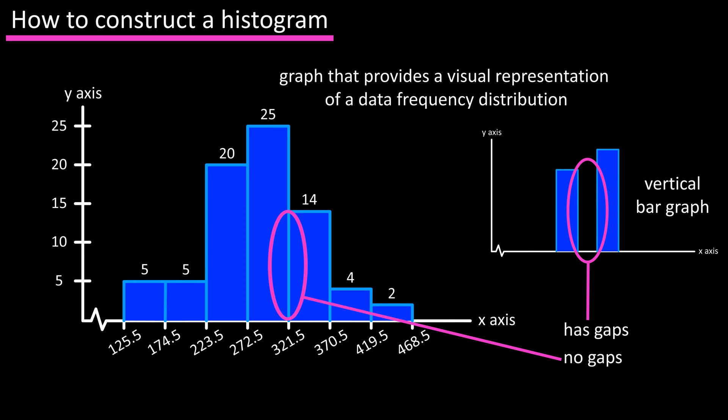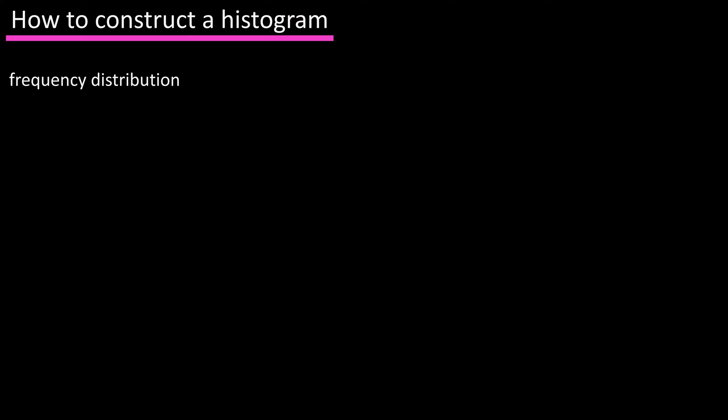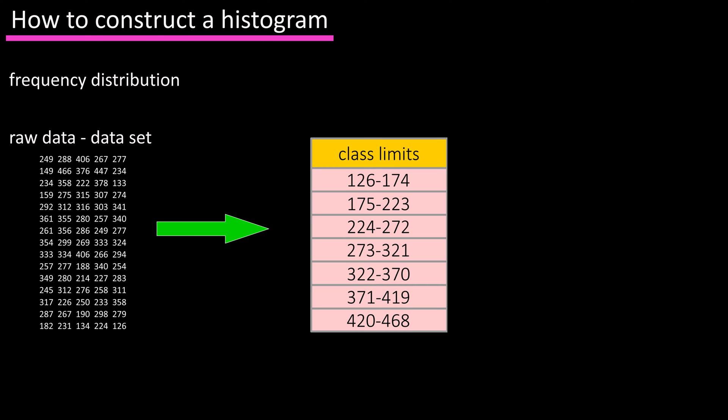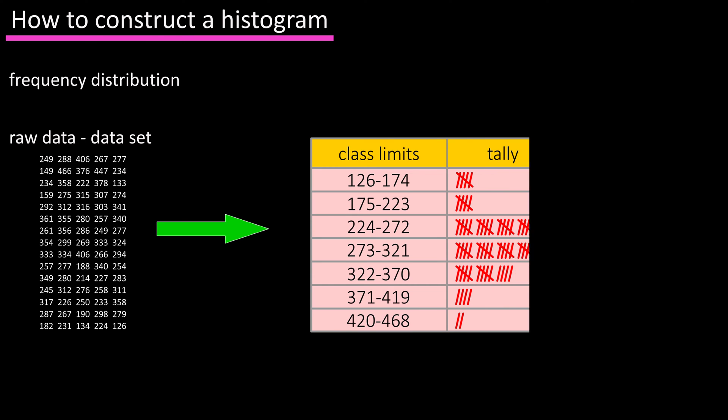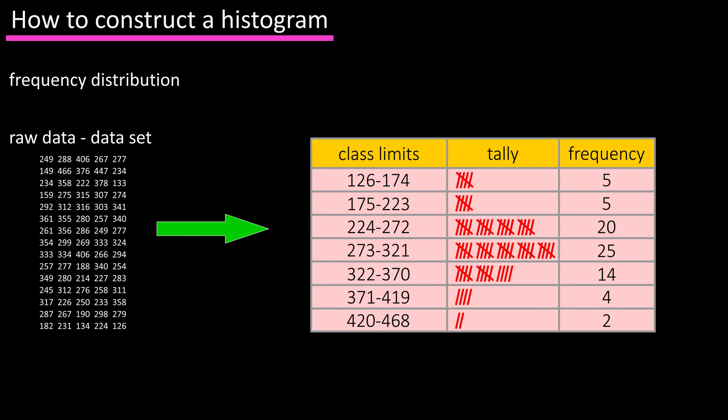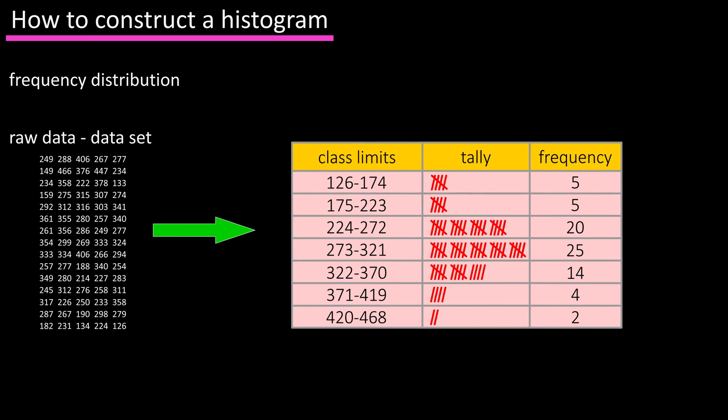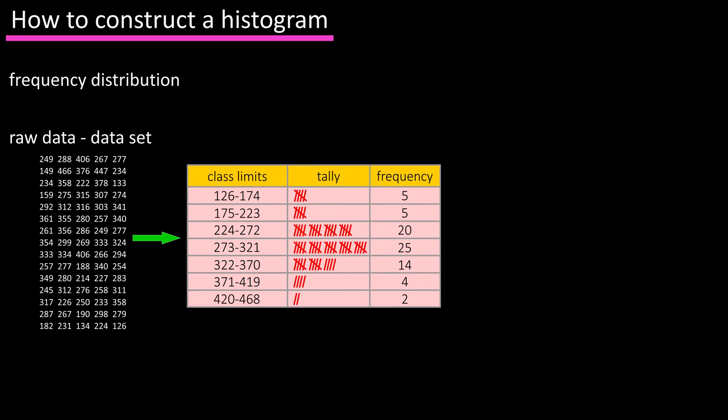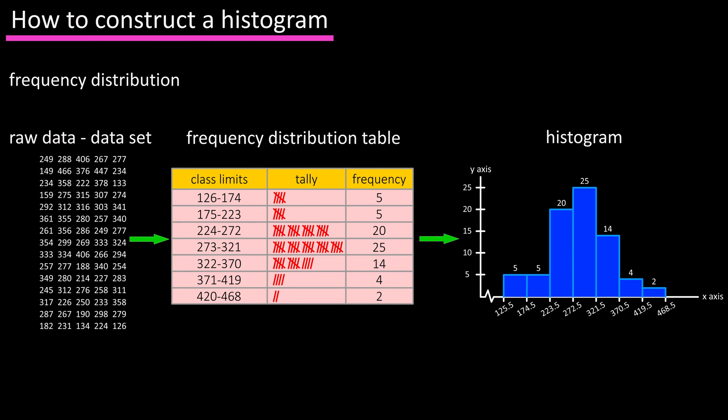In a past video we discussed what a frequency distribution is. Real quick, you have a data set, you break down the data into classes or intervals, you tally up how many data points are in each class and you write that number down, which is the frequency. Now we want to take the data that we organized and summarized in the frequency distribution table and show or display it in a graph form, a histogram.